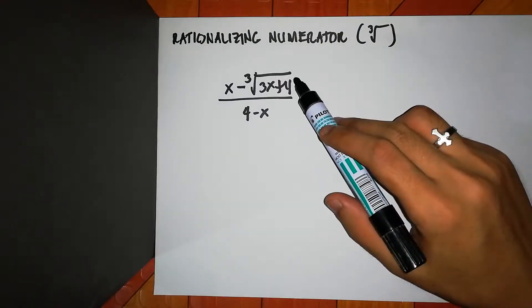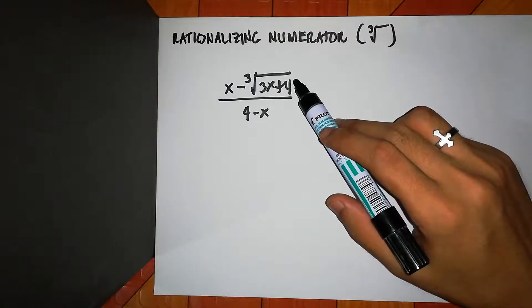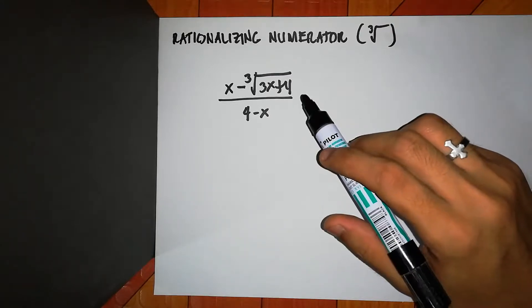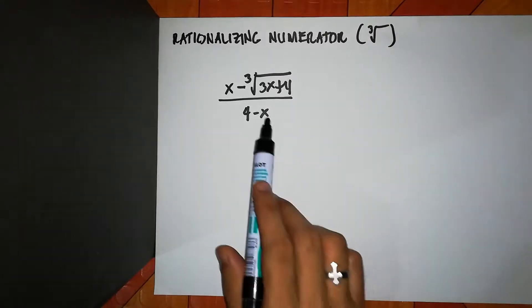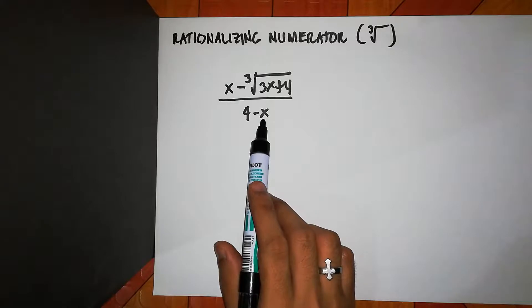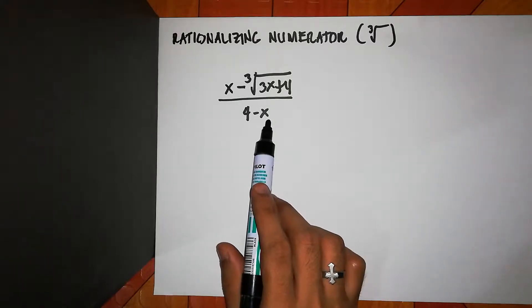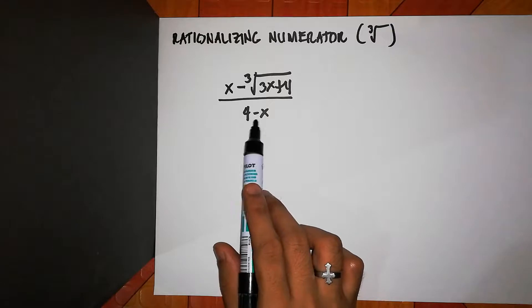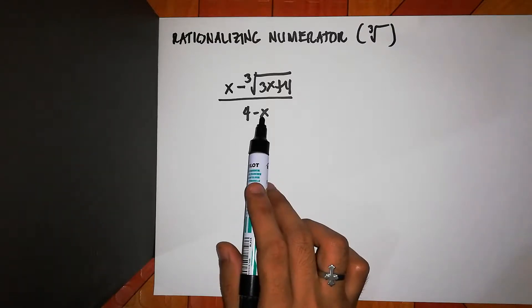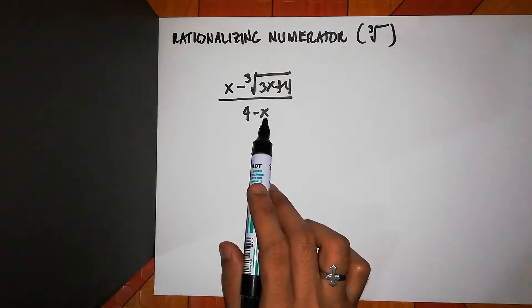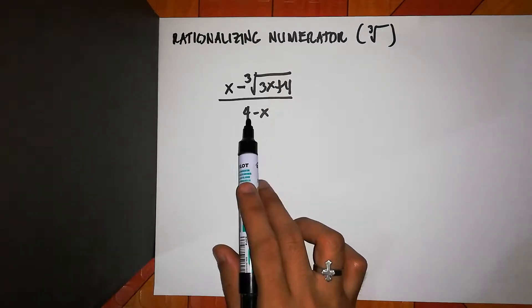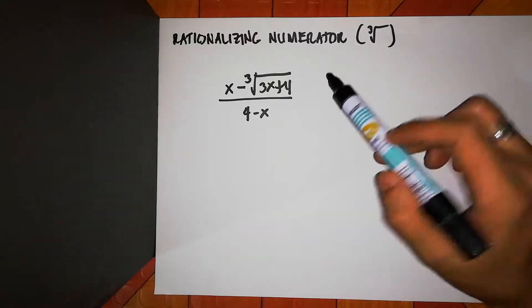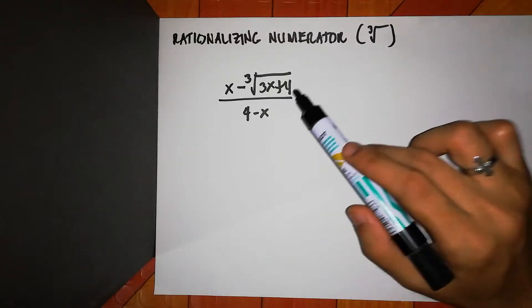Rationalizing a numerator is commonly used in calculus, especially when you try to evaluate a limit. So if you have a value of x that is approaching 4, this will make the expression undefined because 4 minus 4 is equal to 0. So that's why we need to rationalize the numerator.